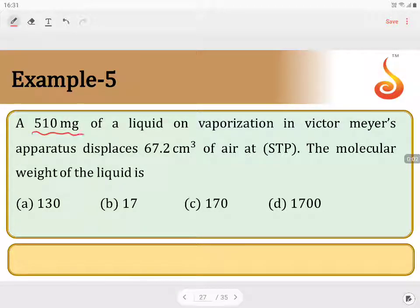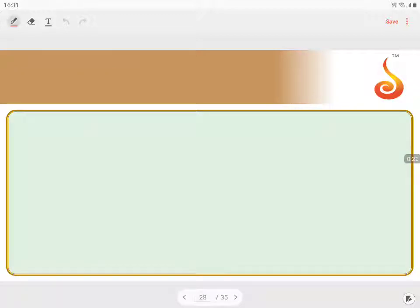A 510 milligrams of a liquid on vaporization in Victor Meyer's apparatus displaces 67.2 centimeter cube of air at STP. The molecular weight of the liquid is - so now we have the different data which is given: 510 milligrams.